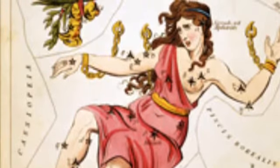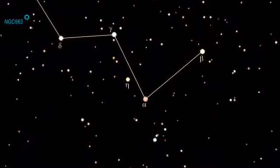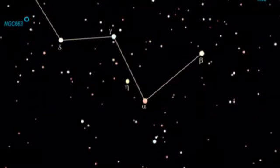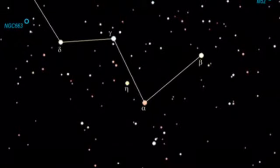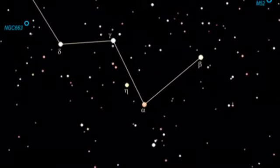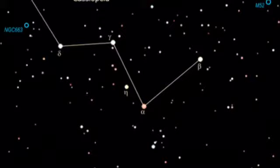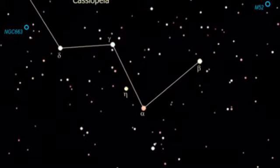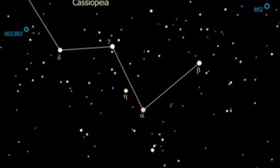The farthest star we can see with our naked eye is the V762 CAS in Cassiopeia. At 16,308 light years away, its brightness is a magnitude of 5.8 or just above the 6th magnitude limit.